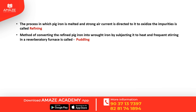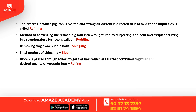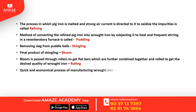In the reverberatory furnace, pig iron is frequently stirred to convert it through a puddling process. The final product of puddling is puddle balls. Slag is then removed in a shingling process, and the final product of shingling is called bloom. Bloom is then passed through rollers to form flat bars, which determines the quality of wrought iron. Rolling is a quick and economical process of manufacturing wrought iron.